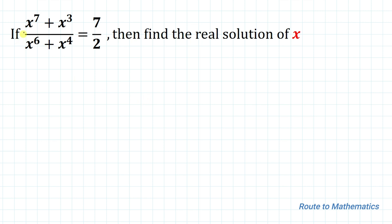We have given: if x to the power 7 plus x cubed, divided by x to the power 6 plus x to the power 4, equals 7 by 2, then find the real solution of x. So we are asked to find the values of x from this given equation.